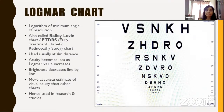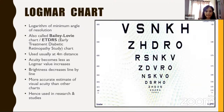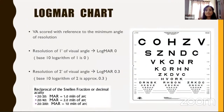Visual acuity becomes worse as the LogMAR value increases. LogMAR 0.3 has better visual acuity than LogMAR 0.6, and acuity decreases line by line — making it a better estimate than Snellen's chart. The visual acuity is scored with reference to the minimum angle of resolution. Resolution of one minute of visual angle is taken as LogMAR 0, because log of 1 is 0.